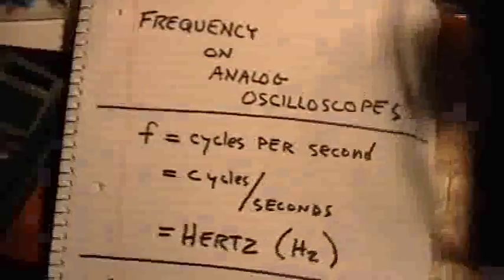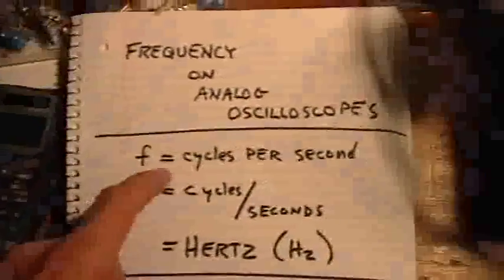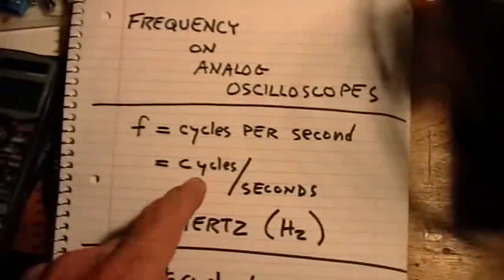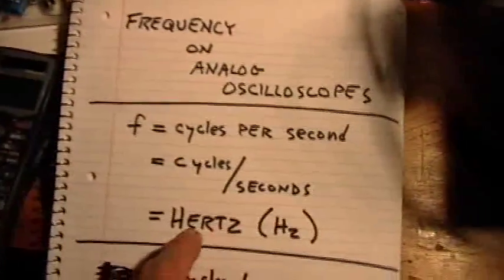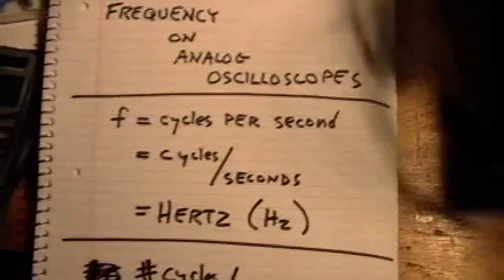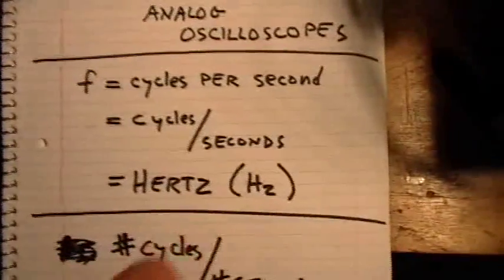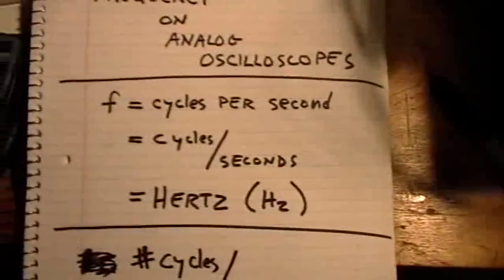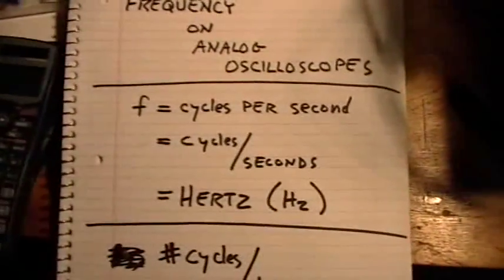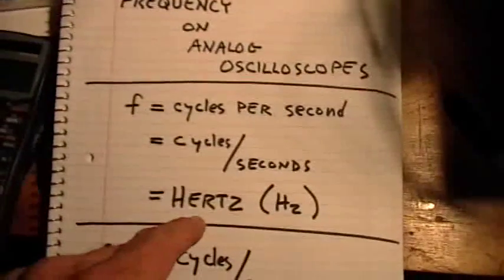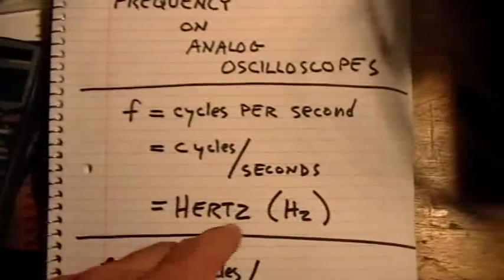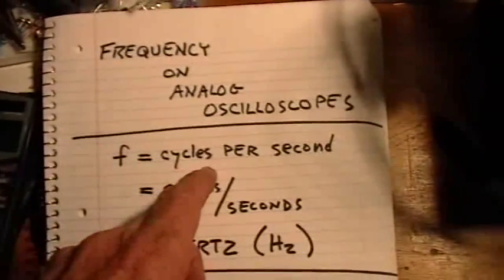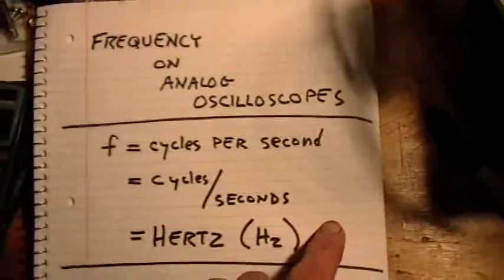Now, frequency is measured in cycles of the waveform per second, and that is cycles divided by seconds. We call that unit Hertz, after this guy named Hertz who discovered radio waves right about the same time Tesla was working with radio waves. So it may be confusing when we say the frequency is one kilohertz, but really what we're saying is the frequency is 1,000 cycles of the waveform per second.